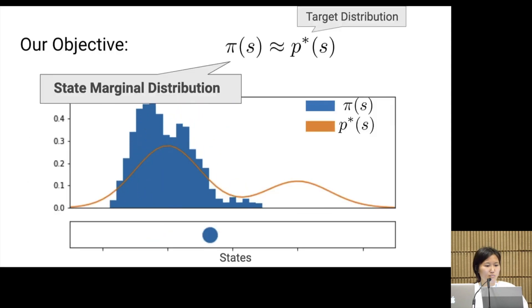Our objective tries to match the blue and orange distributions where the blue histogram is the policy's state marginal distribution, and the orange line is a target distribution p star.